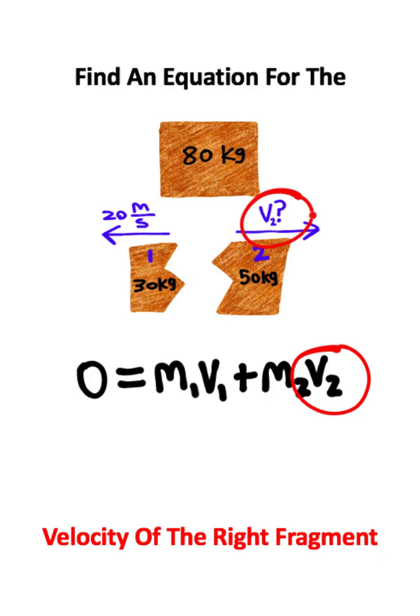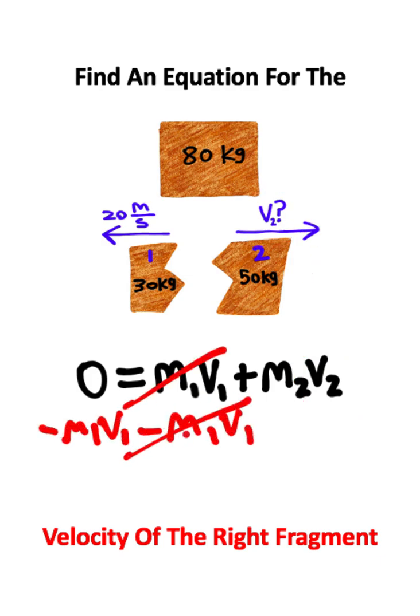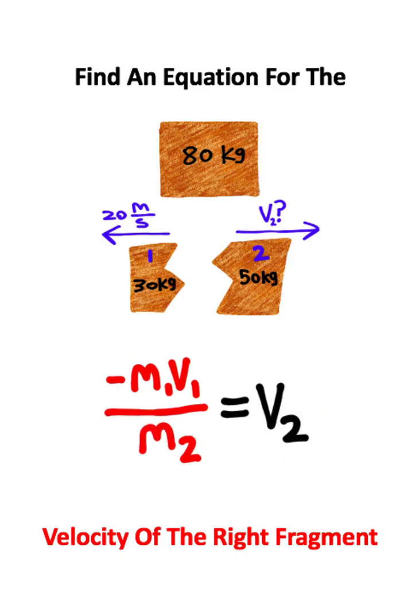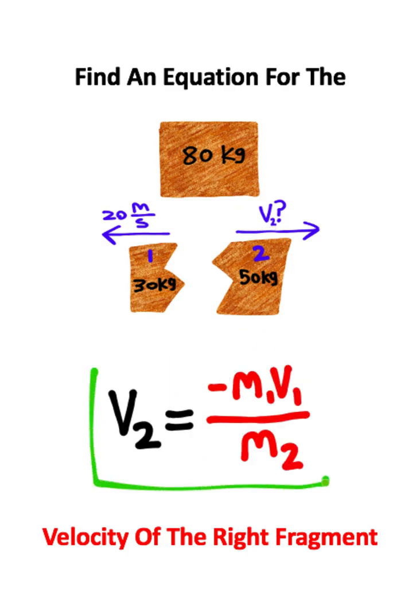Now I'm trying to solve for the velocity of the second fragment. So I'll subtract m1v1 on both sides, that will get it to cancel on the right. Now what I'm going to do is I'm going to divide the mass of the second fragment on both sides. So this is the equation I'll end up with for the velocity of the second fragment, and I'll go ahead and switch sides here to make this look a little more formal. So this is the equation you would need to find the velocity of the second fragment.